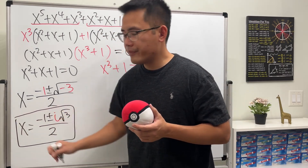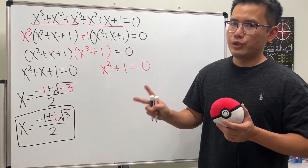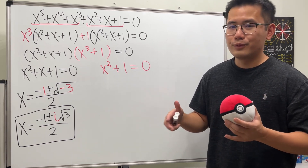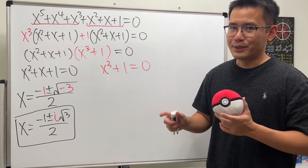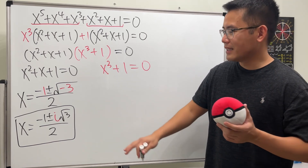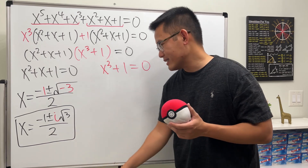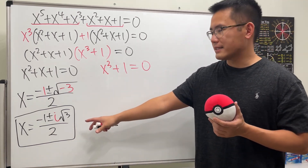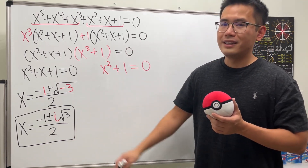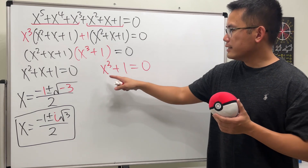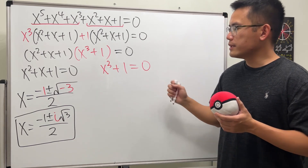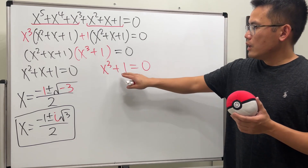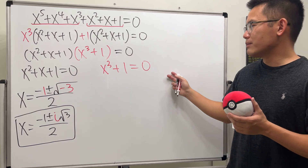These two values correspond to trig values, or maybe expressions of the form e to some power with i, as shown in that other video. For the algebra aspect, this is our result from the first factor. Now for x cubed plus one equals zero — do not just subtract one from both sides and say x equals negative one, because that is only one solution.